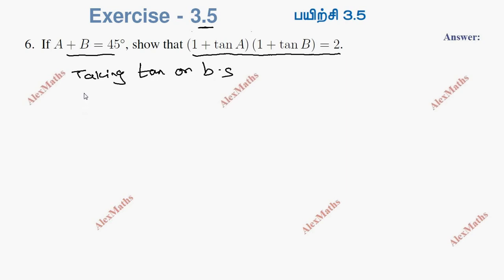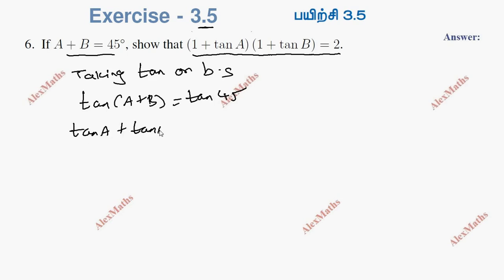tan(a + b) equals tan 45. The tan addition formula is: tan a plus tan b, whole divided by 1 minus tan a into tan b, is equal to tan 45, which equals 1.